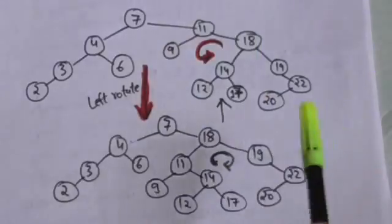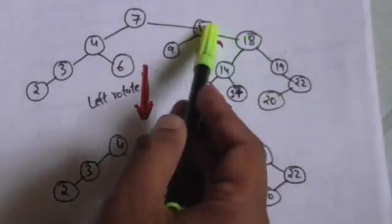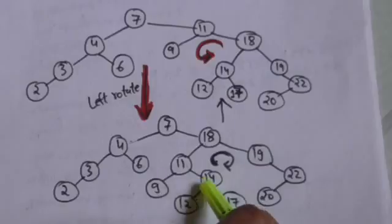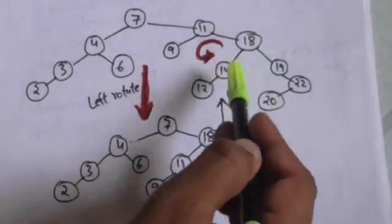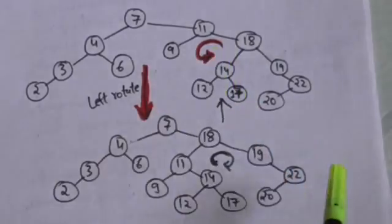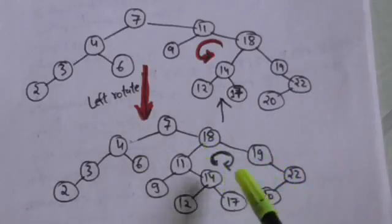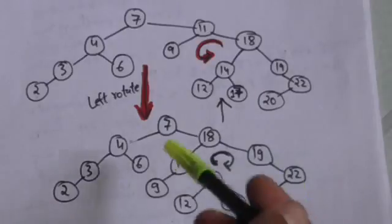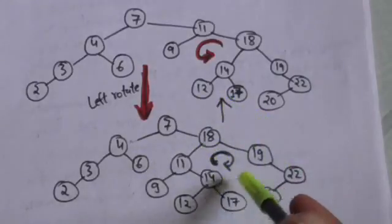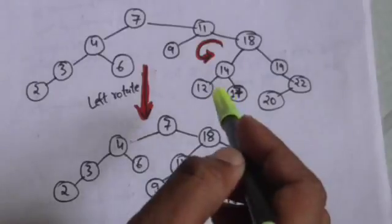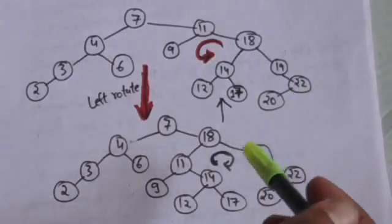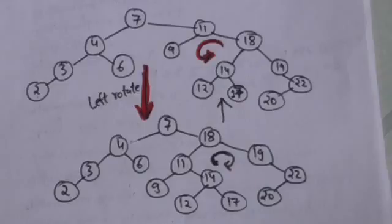Node 18 will become the right child of node 11, and the right child of node 11 will become the left child of node 18. After doing the right rotation on node 18, we get the resulting binary search tree. The binary search tree property is preserved by right rotation — before and after the rotation, the tree remains a valid BST. So both left rotation and right rotation preserve the binary search tree property.